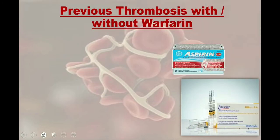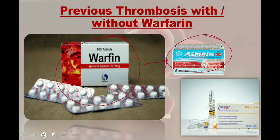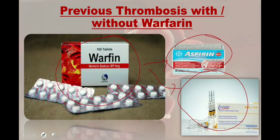In cases of previous thrombosis with or without warfarin: if the patient is on maintenance warfarin, transfer to aspirin and low molecular weight heparin as soon as the pregnancy is confirmed. If the patient is not on warfarin, start aspirin from the preconception period and commence low molecular weight heparin once the pregnancy is confirmed, then increase low molecular weight heparin to twice daily at 16 to 20 weeks of gestation.